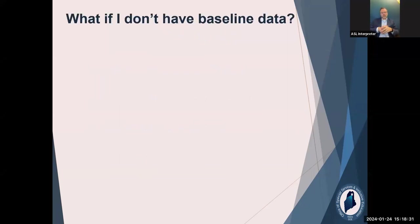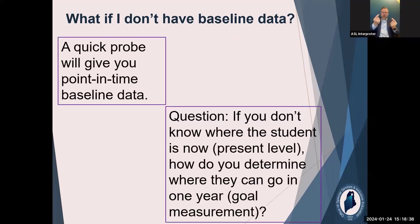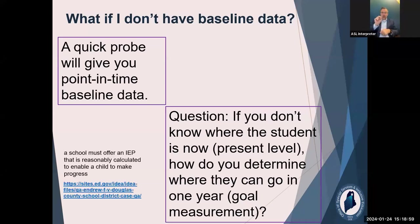We get this question: what if I don't have baseline data? You can do a quick probe — run it a couple of times, even once. That's your baseline data right now: at this moment, this student is right here. Think about Andrew F. — how are you going to reasonably calculate your goals if you don't know where the student is right now? How are you going to calculate a goal achievable in one year? If all you have time to do is a quick probe, that is your baseline data and that's okay.